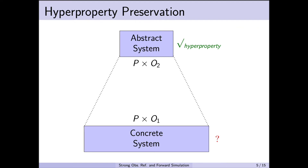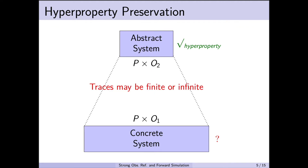We can think of this object as a library that the client program uses. At the abstract level, we have a client program p interacting with an abstract object O2, whereas in the concrete implementation, we have the same client program interacting with a concrete instantiation O1 of the abstract object O2. We note that we're expecting the client and object to be concurrent, and the traces may be finite if they terminate or infinite.